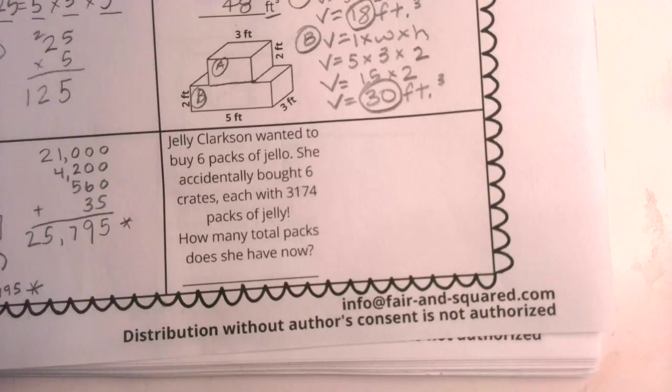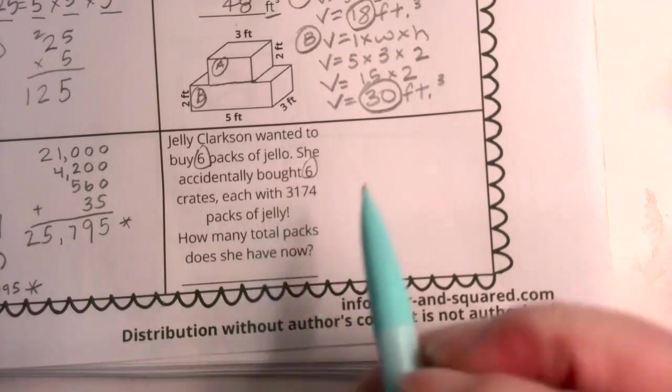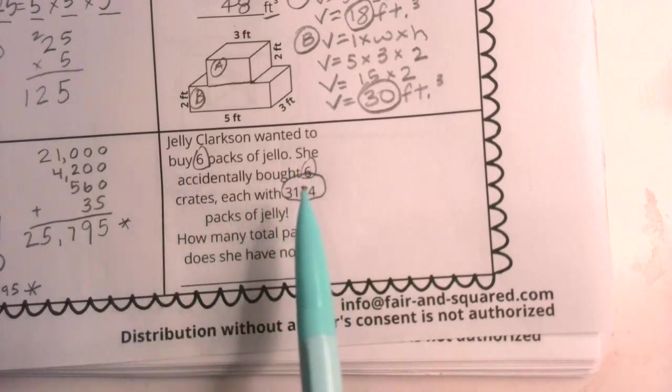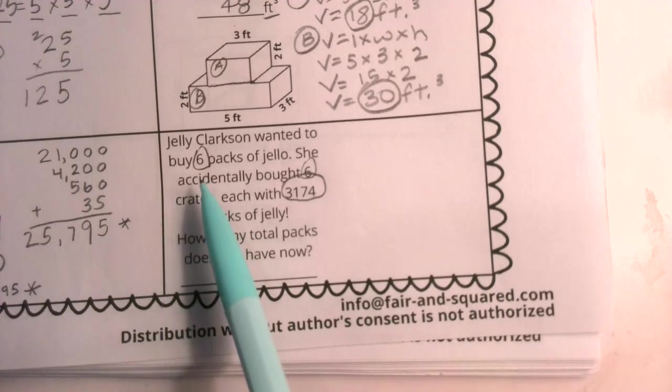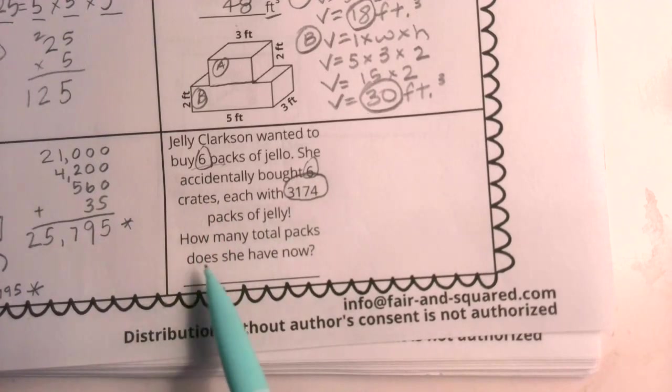Now a little break from volume as we think about Jelly Clarkson. Jelly Clarkson wanted to buy six packs of jello. She accidentally bought six crates, each crate having 3,174 packs of jelly. Oh my. How many total packs does she have now? Man, this sounds like something that might happen accidentally on Amazon, right? Or maybe when a child just has their parent's phone and accidentally orders tons of dum-dums. Well, in this case, it's tons of jelly. Now notice there's actually three numbers that are here in our problem. Does that mean that all three of those are going to be multiplied together? No.